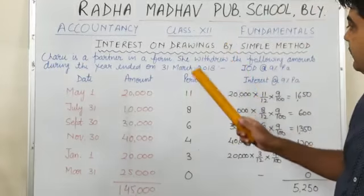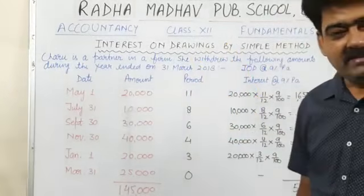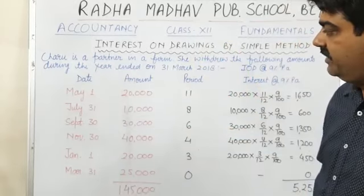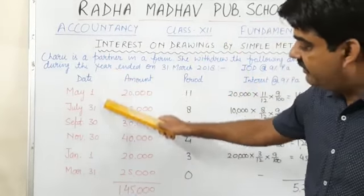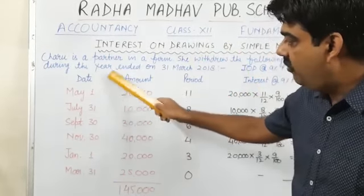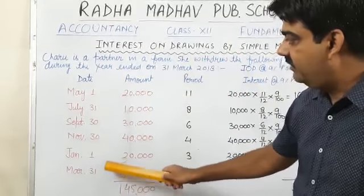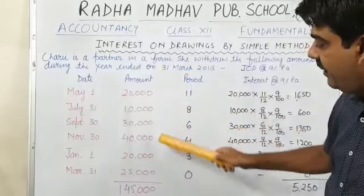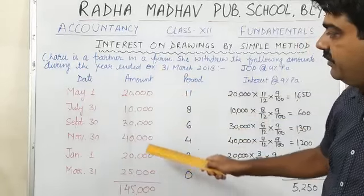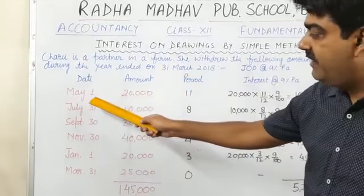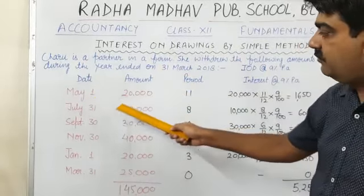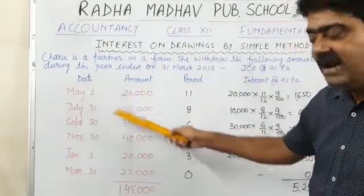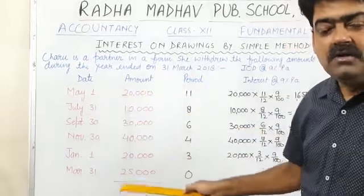This is the simple drawing method. In this question, you can see these are the dates of withdrawal of a particular partner, and these are the amounts of withdrawal. On May 1, she has withdrawn Rs. 20,000; on July 31, Rs. 10,000, and so on.